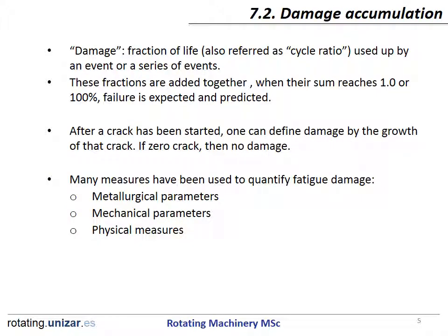One approach to variable load histories uses the concept of damage, which can be defined as the fraction of life — also referred to as cycle ratio — used up by an event or a series of events. These fractions are added together; when the sum reaches 1, or 100%, failure is then expected and predicted.